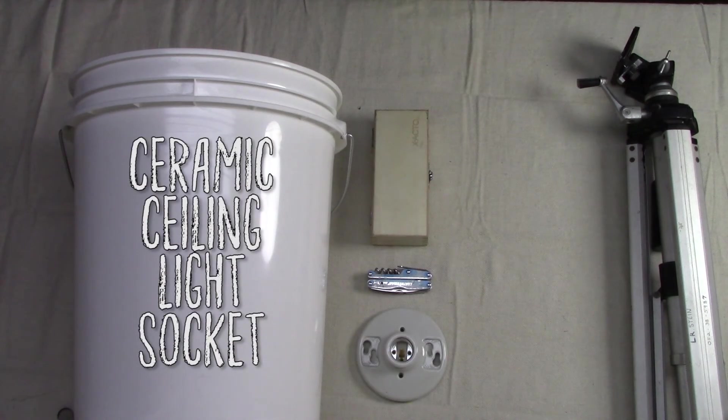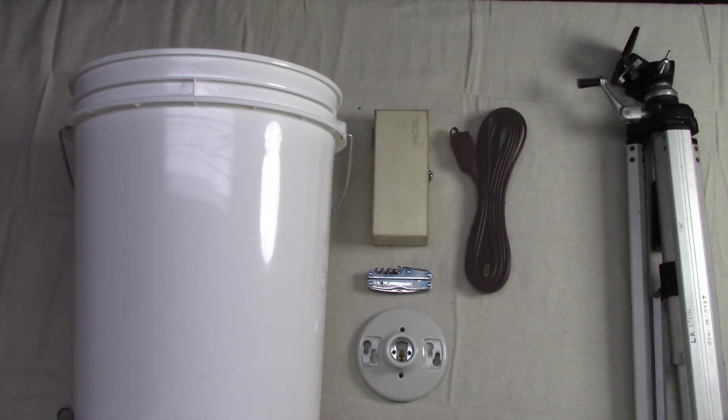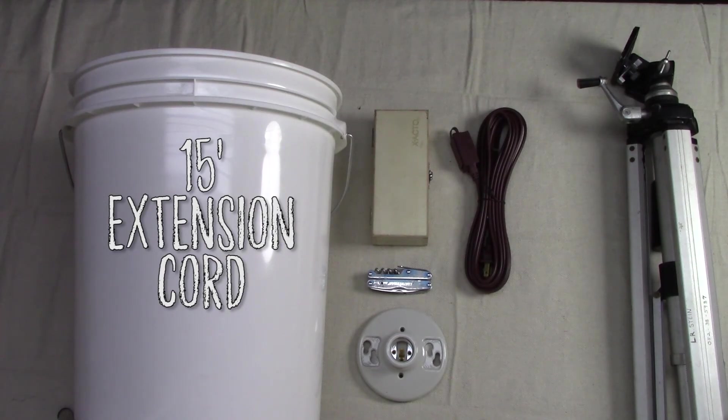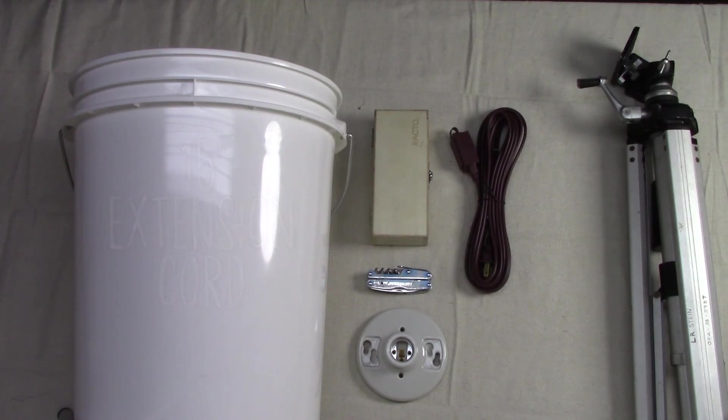A ceramic ceiling light socket. A 15-foot two-prong extension cord. This is another one that you may have laying around, however we will be cutting off one end, so be sure it isn't one you're going to miss later.